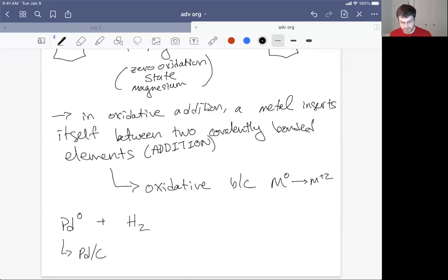Now what happens is that the covalently bonded system, which is H2, actually receives a palladium atom between it to make palladium plus two.